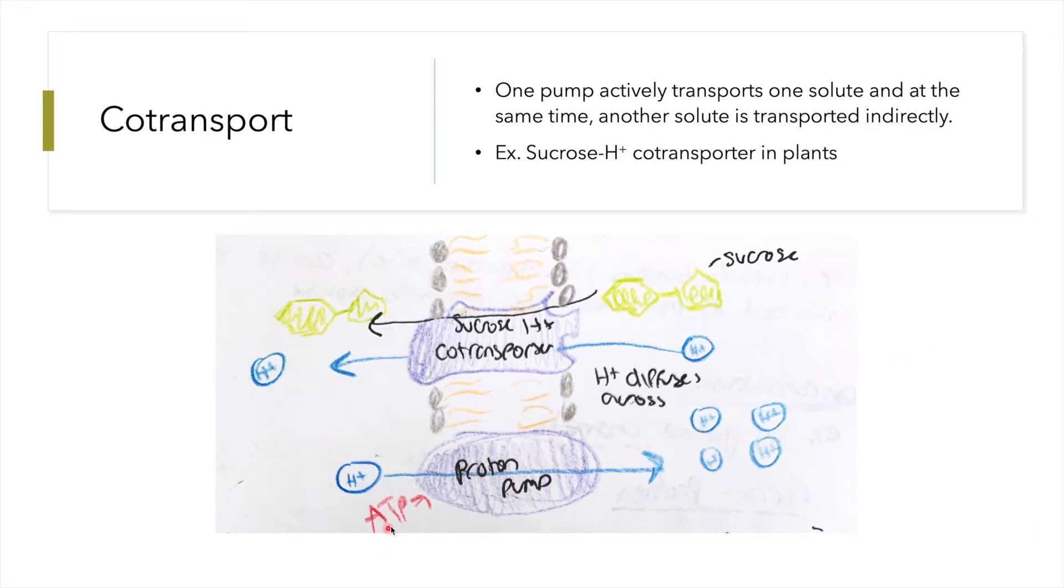The proton pump uses ATP to pump hydrogen ions against their concentration gradient. This creates a proton motive force, stimulating the diffusion of hydrogen ions back across the membrane. To do this, it binds to the sucrose hydrogen ion co-transporter and sucrose binds along with it. So essentially, sucrose gets a free ride into the cell due to the proton pump.